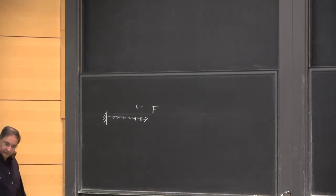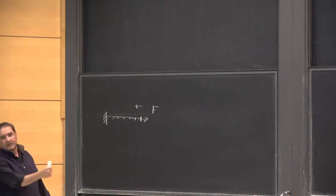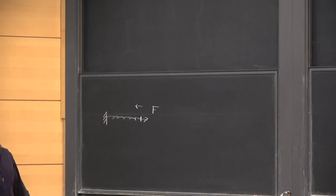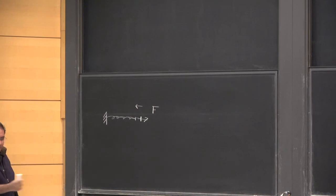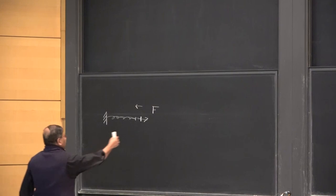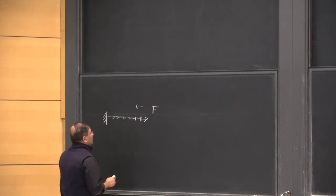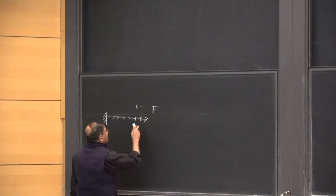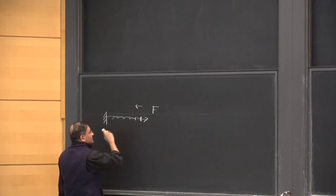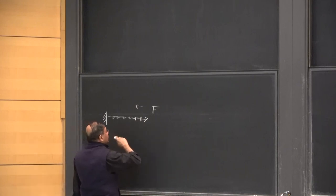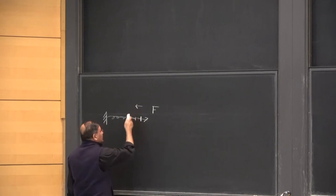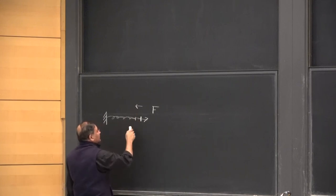The spring would want to go back to its original unstretched length — that's what springs do. If you compress the spring, it would like to come back to its unstretched position. If you pull a spring and let it go, it will oscillate back and forth. We'll come to the oscillation part later, but first let us understand how this elongation happens.